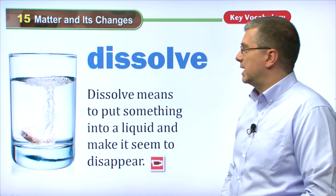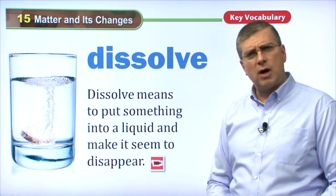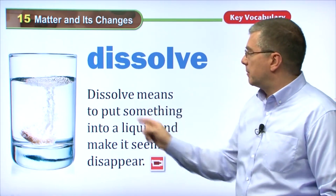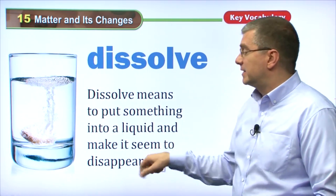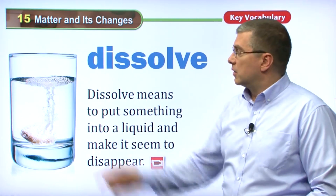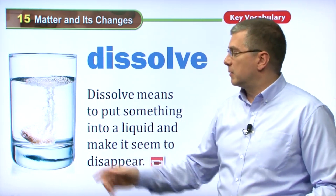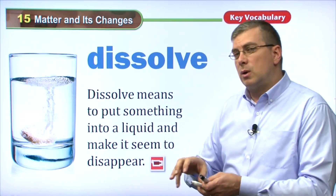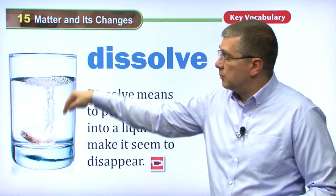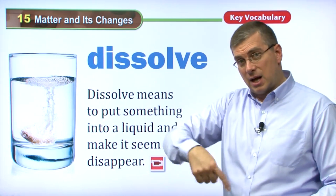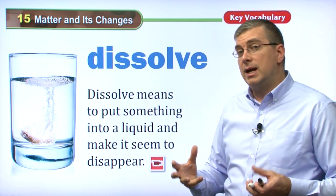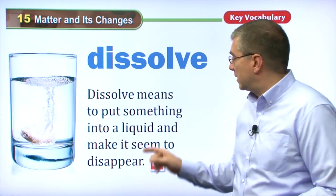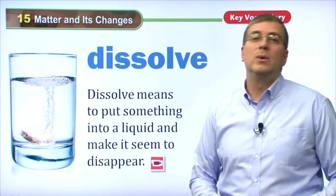Another way that you can mix things together is to dissolve them. Dissolve — that's an interesting word. To dissolve something means to put something into a liquid and make it seem to disappear. So if you put something into a liquid, it seems to disappear. Here's a pill that's going down and it's fizzing — it'll disappear; the liquid will absorb it. If you put sugar into iced tea and mix it up, the sugar will dissolve in the liquid and the sugar will disappear. You won't see it — it's still there, you just can't see it.